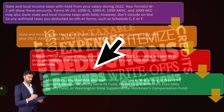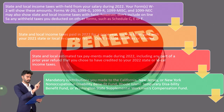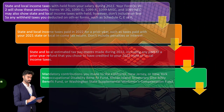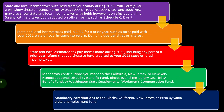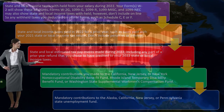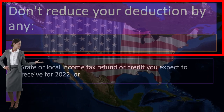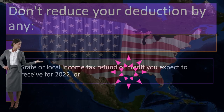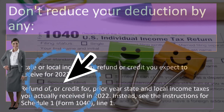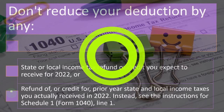If itemizing for the state tax deduction, mandatory contributions made to the California, New Jersey, or New York non-occupational disability benefit fund, Rhode Island temporary disability benefit fund, or Washington state supplemental workers' compensation fund are also included. Mandatory contributions to the Alaska, California, New York, New Jersey, or Pennsylvania state unemployment fund as well. Don't reduce your deduction by any state or local income tax refund or credit you expect to receive for 2022, or a refund of prior year state and local income taxes you actually received in 2022 — instead, see the instructions for Schedule 1.